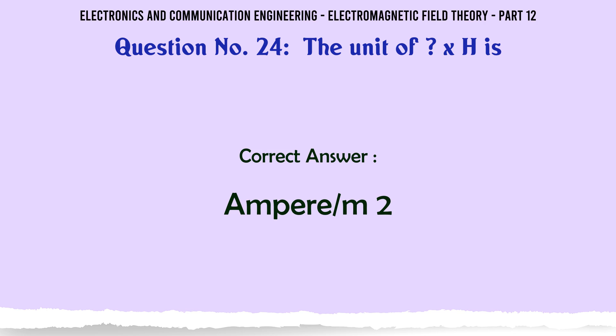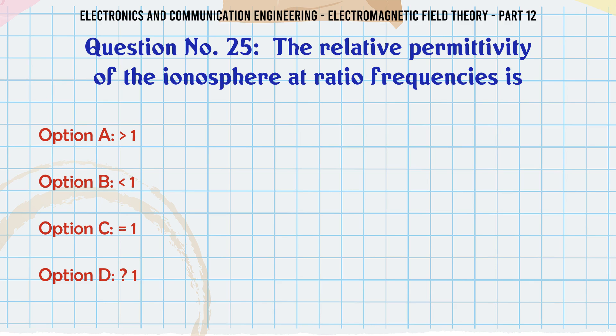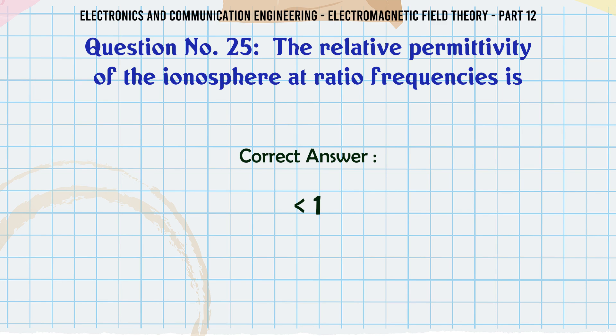The relative permittivity of the ionosphere at radio frequencies is: A. less than 1, B. equal to 1, C. greater than 1, D. much greater than 1. The correct answer is less than 1.